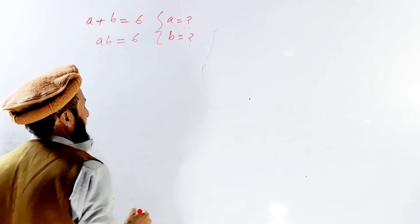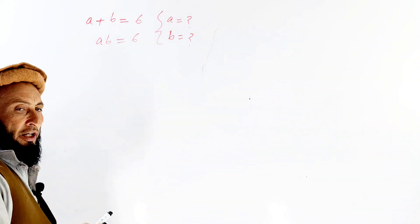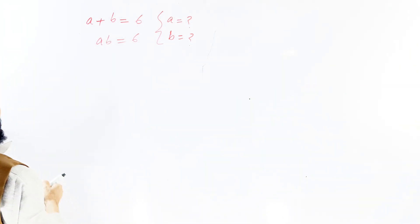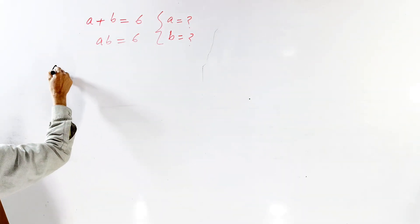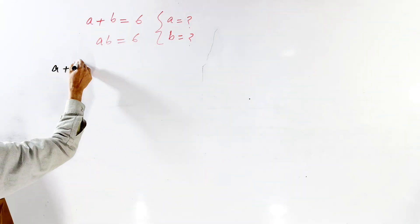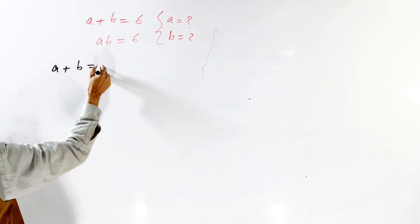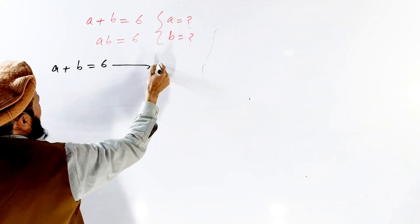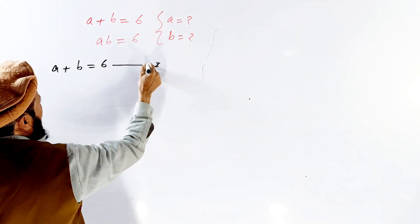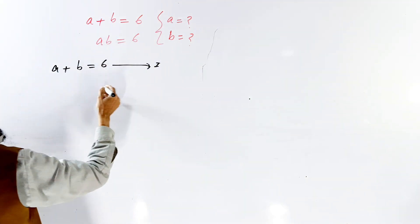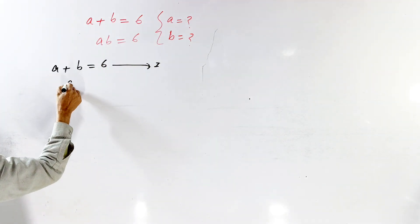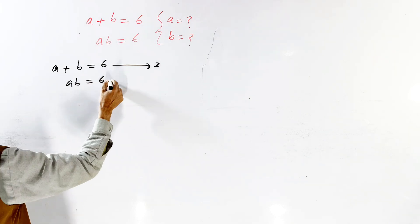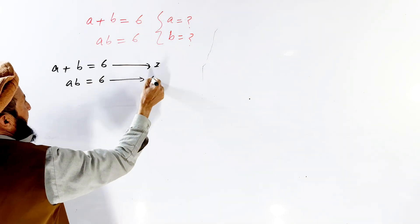How we calculate the value of A and B? So there are two equations. First equation: A plus B is equal to 6. Second equation: AB is equal to 6.